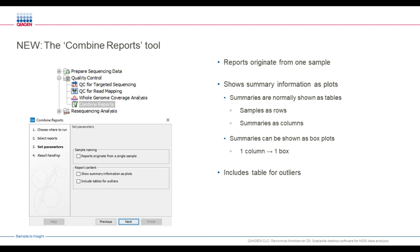Metadata tables are easy to construct — you can do that within the workbench or in Excel and import it, creating a metadata table and linking it to the data and algorithms. The Combined Reports tool is also new. Reports can originate from one sample — if one workflow has many steps and creates many reports, you can create a combined report on that one sample from all those steps to quickly get an overview. You can also do it for several samples in one report so you can quickly spot outliers and deviant samples. Summary information is shown as plots and includes tables for outliers.